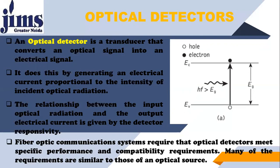Basically, the Optical Detector detects or senses the Optical Energy, Optical Power, and Optical Signal at its input and gives an Electrical Signal at its output. If you look at the picture to understand how this phenomenon happens: light is coming from outside, and light is composed of photons, and each photon has energy hf.